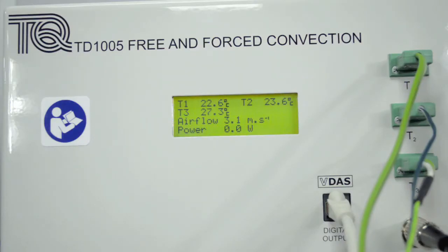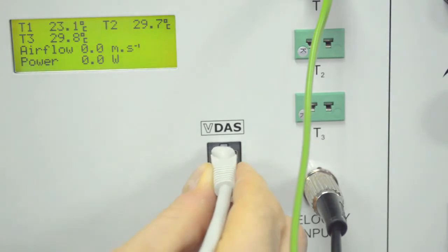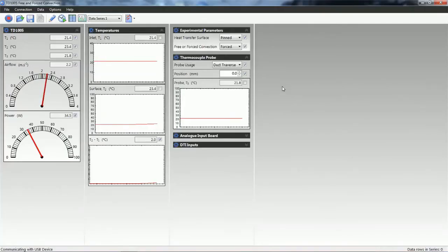A digital display shows the heater power, air velocity, and the temperatures measured by the thermocouples. The TD1005 can be used with TechQuipment's versatile data acquisition system.